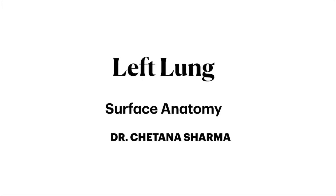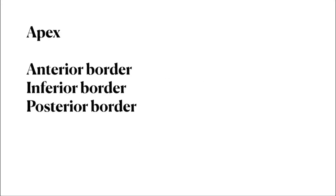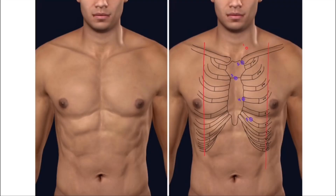Hello everyone. In this video we will study about surface marking of the left lung. As we all know, the lung has an apex and three borders: anterior, inferior, and posterior border. First, I will mark the apex of the lung, after that the borders of the lung.